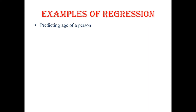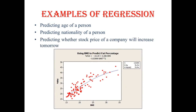Examples of classification include gender classification and spam mail vs non-spam mail — basically two or more classes. Examples of regression, which shows the difference from classification: predicting the age of a person based on looks or other criteria, predicting the nationality of a person, predicting whether the stock price of a company will increase tomorrow, or predicting the price of a flat or plot based on area. The prediction can be based on one or more variables.